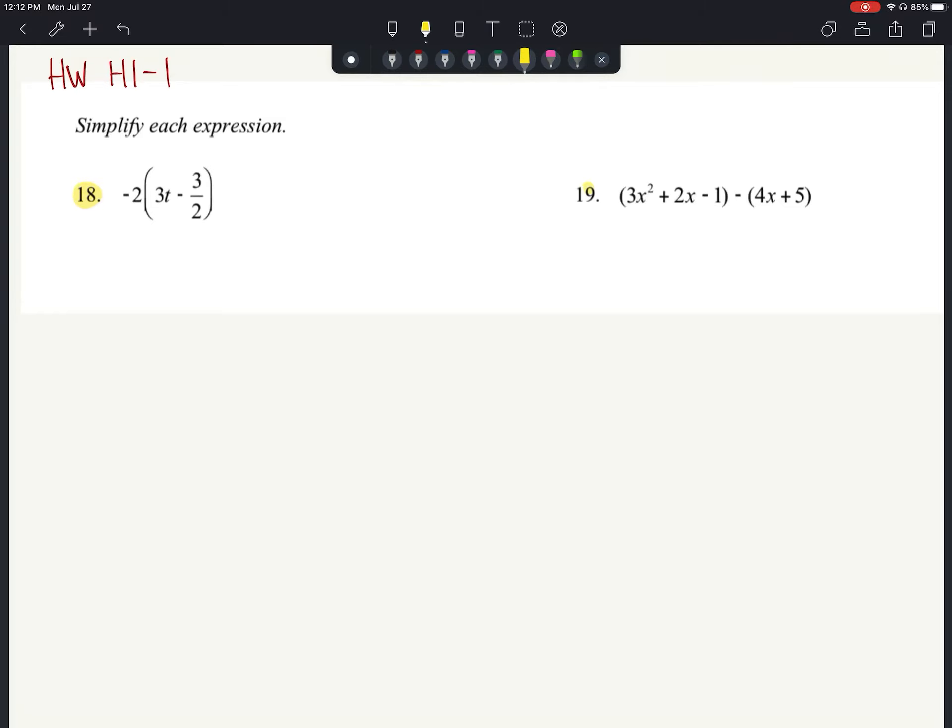This is the number one mistake that happens all year long in Algebra 2 every single year. It's when we're looking at distributing a negative through a grouping symbol or a quantity there.